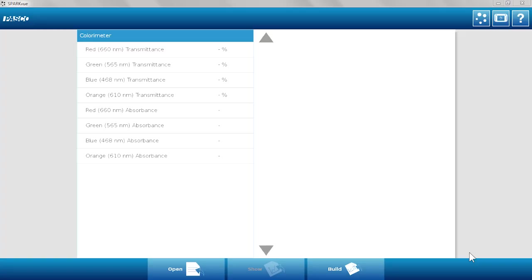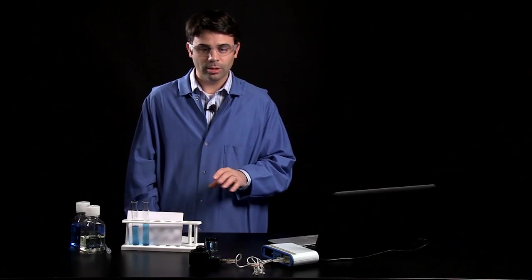I can also look at the SparkView screen, and this is the great thing about the colorimeter. It displays all the transmittance and absorbances at once. So I see red, green, orange, blue transmittance and the absorbance of those colors. When it's calibrated, I should see 100% transmittance and zero for the absorbance for each of those things. That way I know that my system is blanked.